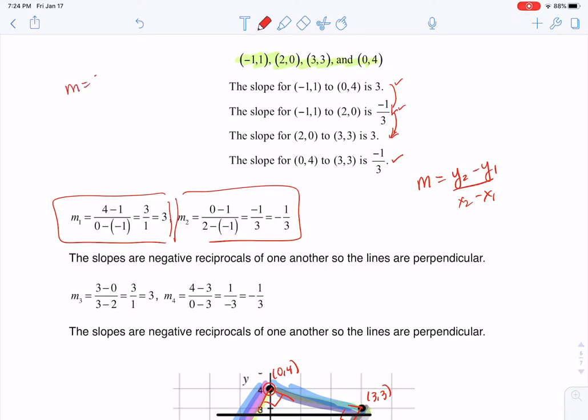Because if one slope is 3, what's the slope of a line that's perpendicular to it? Well, it would be the negative reciprocal. So since all of those checked out, I've proven I've got a rectangle. Thanks so much everyone, bye.